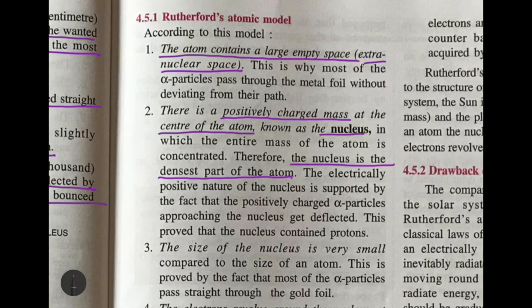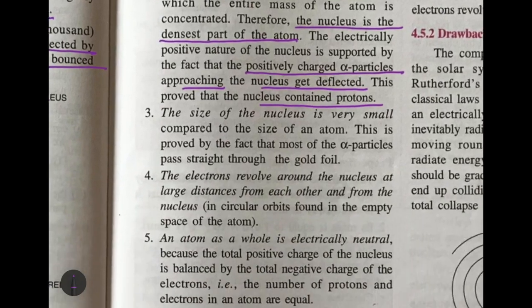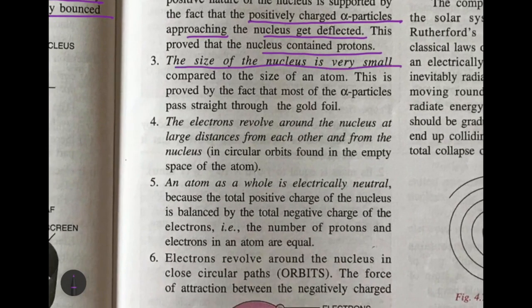The electrically positive nature of the nucleus is supported by the fact that positively charged alpha particles approaching the nucleus get deflected — like charges repel. When the positively charged alpha rays came near the nucleus, the nucleus, also having positive charge, either deflected them back or changed their path. The size of the nucleus is very small compared to the size of the atom — proved by the fact that most alpha particles passed straight through the gold foil.